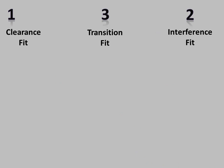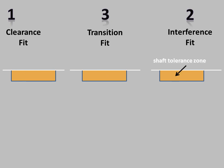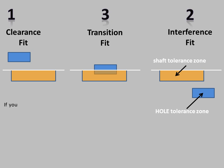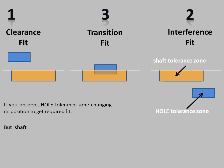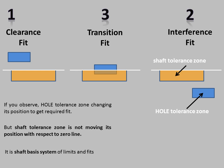We will now see clearance fit, transition fit, and interference fit together. This is the zero line and tolerance zone of shaft. In interference fit, the tolerance zone of hole will always lie below the tolerance zone of shaft. In clearance fit, the tolerance zone of hole will always be above the tolerance zone of shaft. But in transition fit, the tolerance zone of hole and tolerance zone of shaft will overlap — it may overlap partially or completely. If you observe, the hole tolerance zone changes its position to get the required fit, but the shaft tolerance zone is not changing its position with respect to the zero line. This is the shaft basis system of limits and fits.